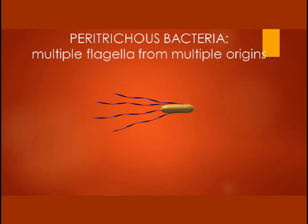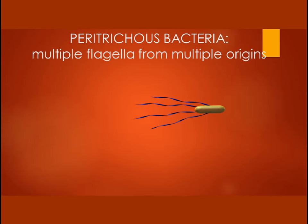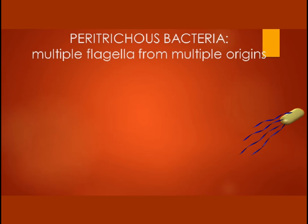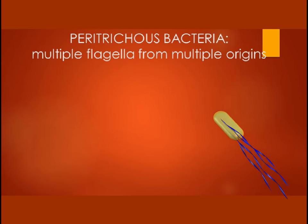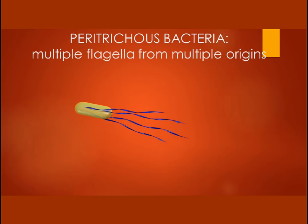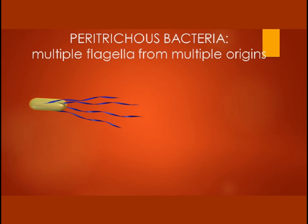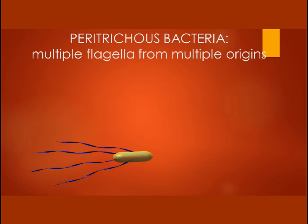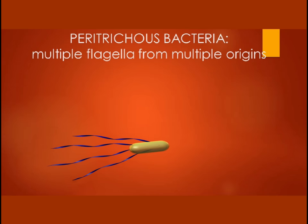Finally, in peritrichous bacteria, multiple flagella originate at multiple points. They can all rotate together to move the bacterium in one specific direction.